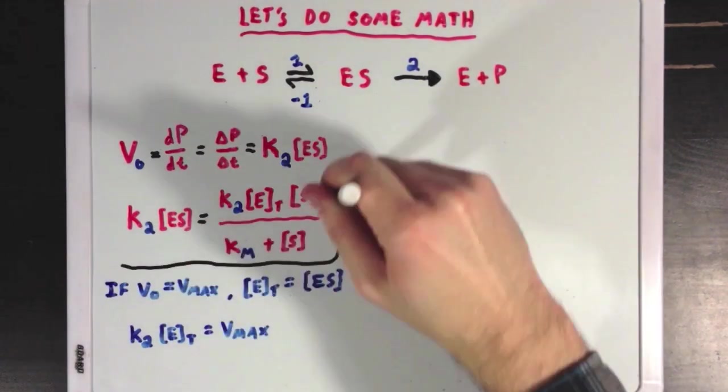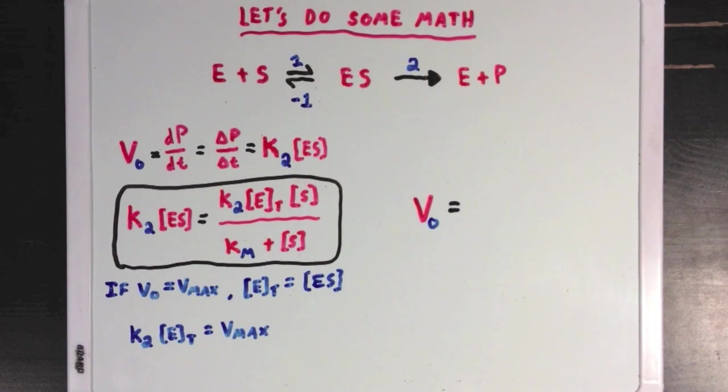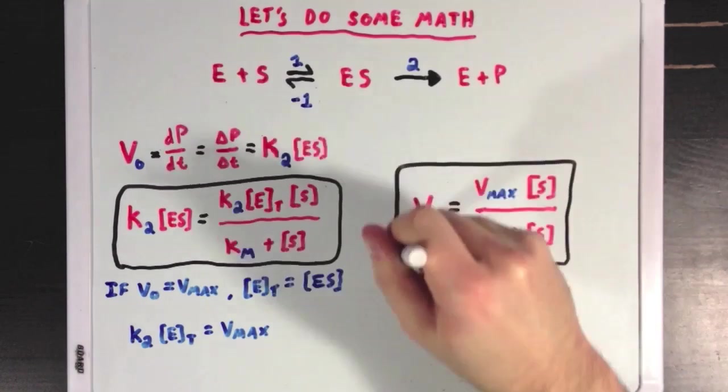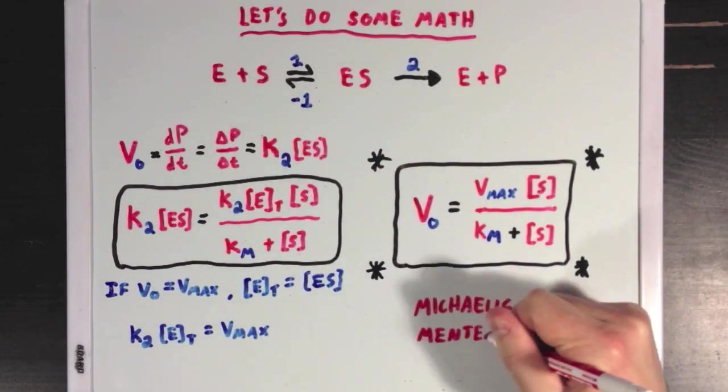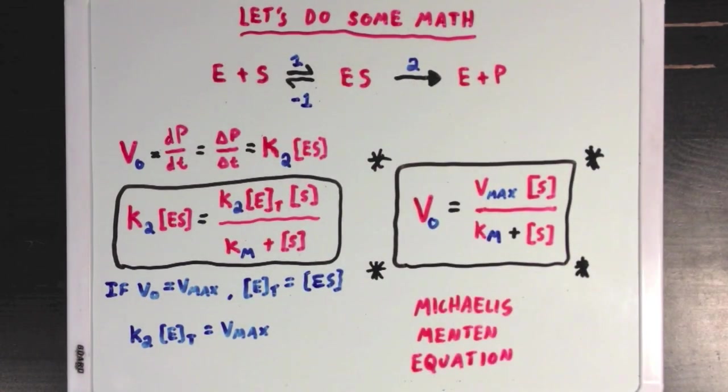So I'll make some room here and then sub in K2ES for VO, and K2ETotal for Vmax, and then we finally get to our end equation, which is called the Michaelis-Menten equation, and is super important when we talk about enzyme kinetics.